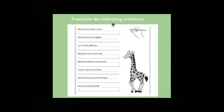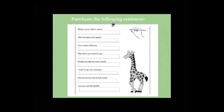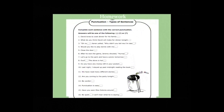Now punctuate the following sentences. 'What is your sister's name?' — question mark. 'I like bananas and apples.' — capital I, full stop. 'Can I come with you?' — question mark. 'Why don't you want to go?' — question mark. 'Would you like to read a book?' — question mark. 'I want to go out and play.' — full stop. 'Did you bring your lunch today?' — it's a question, so question mark. 'Can you see the giraffe?' — question mark.